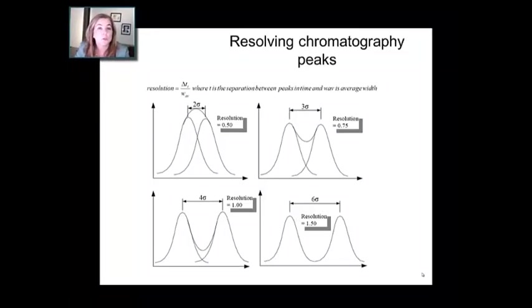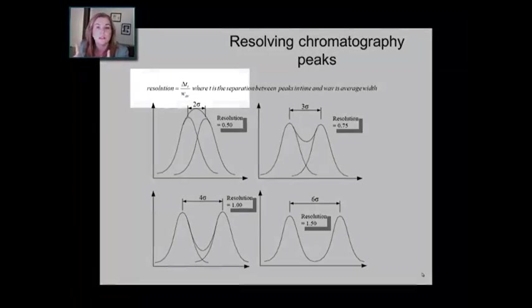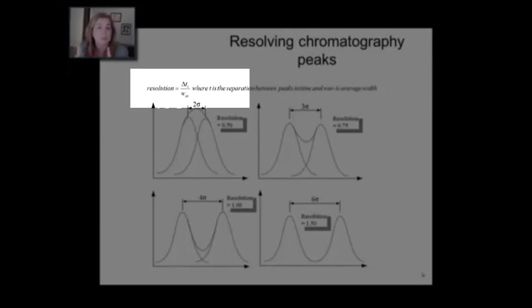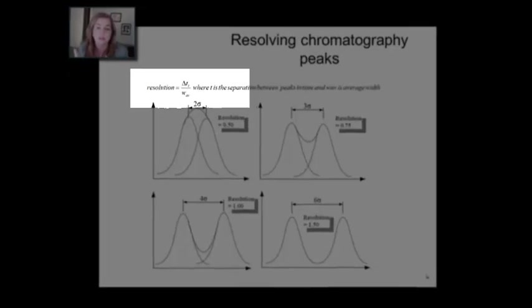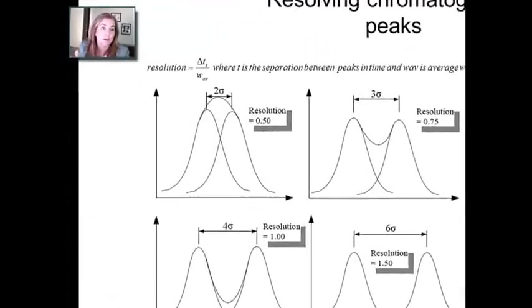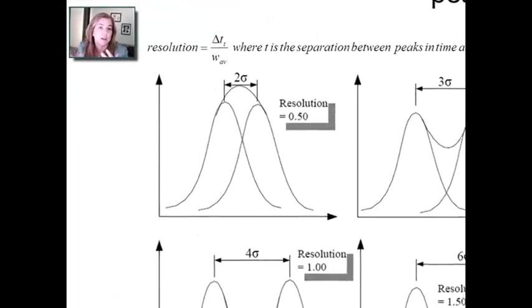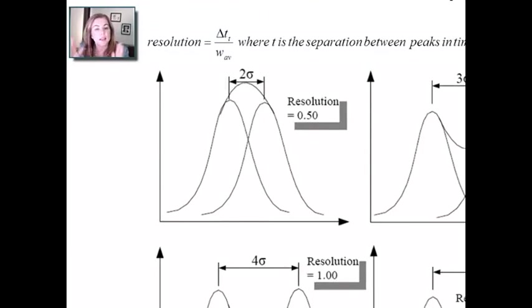The resolution between two peaks is defined in chromatography by the distance or the time difference between their retention times. So if you have one at ten minutes and one at five minutes, just delta t_r is five minutes. And then you divide that separation between the peak heights by the average of their widths. And for that, you're going to take their base width. If you have a measure of another width, you just have to convert it to the base width to use this formula.